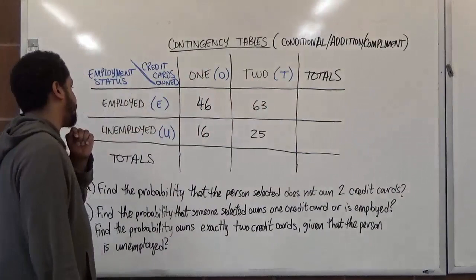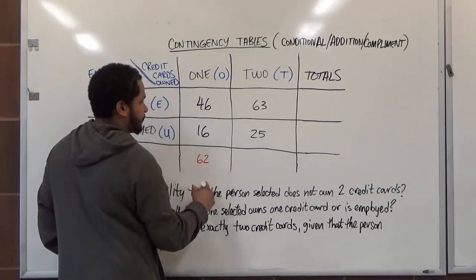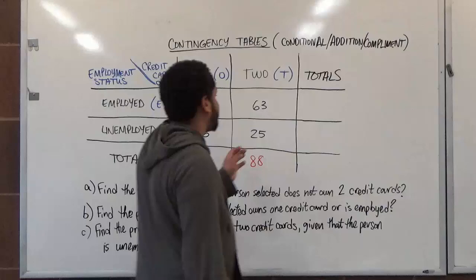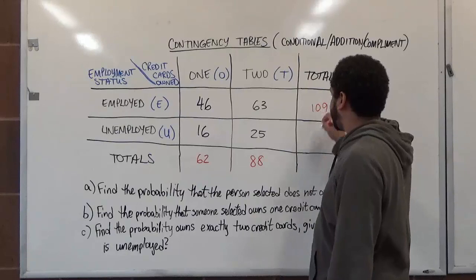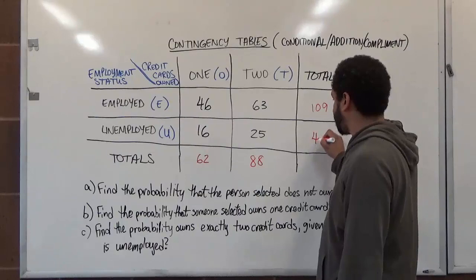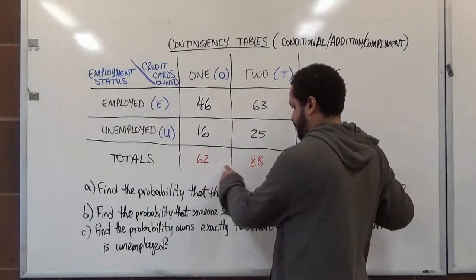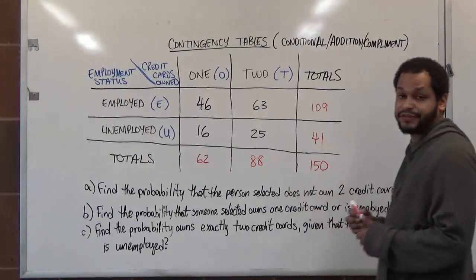46 plus 16 gives us 62 — the total with one credit card. 63 plus 25 gives us 88 — the total with two credit cards. For the row totals: employed is 46 plus 63, which is 109; unemployed is 16 plus 25, which is 41. Now, 109 plus 41 is 150, and 62 plus 88 is also 150. So our grand total is 150 people.